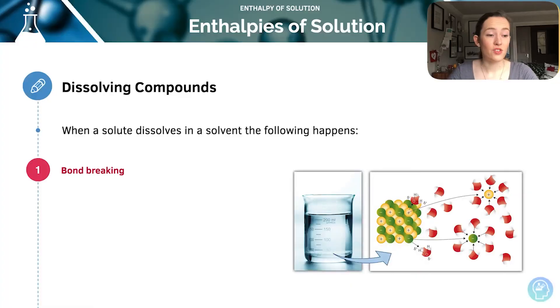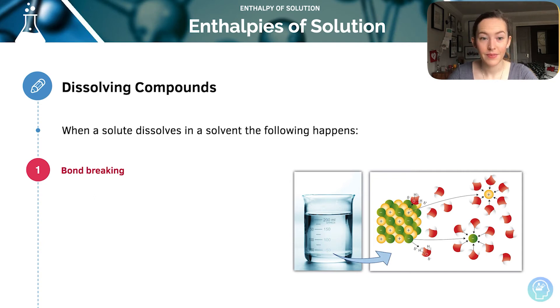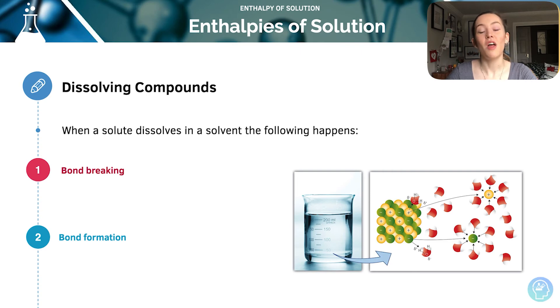Infinite dilution means that the ions aren't interacting with each other at all — they're only interacting with the water molecules. In these equations, Aq is taken to mean a large excess of water. When a solute dissolves in a solution, we get bond breaking because we need to break up the ionic lattice first. That is an endothermic process. Then we get new bonds being formed between the individual ions and the water molecules — those intermolecular forces — and this process is exothermic.